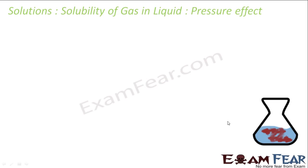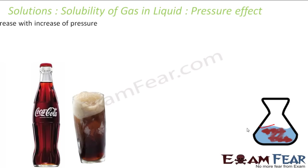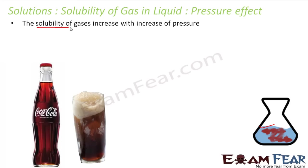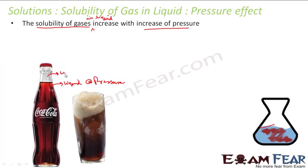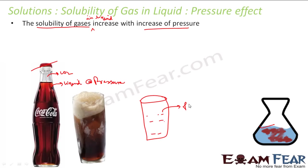The solubility of gas in liquid is greatly affected by pressure. If you increase the pressure, the solubility of the gas increases. The best example is soda — when a soda bottle is packed at high pressure, carbon dioxide is dissolved in it. But the moment you open the lid, the high pressure drops to atmospheric pressure.